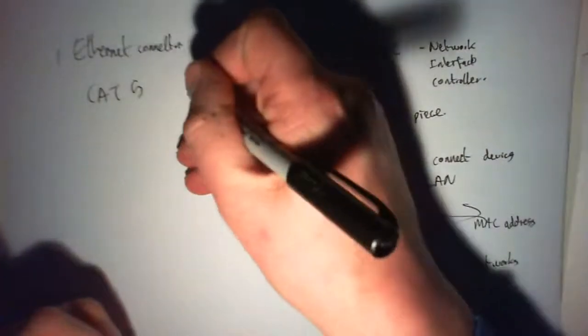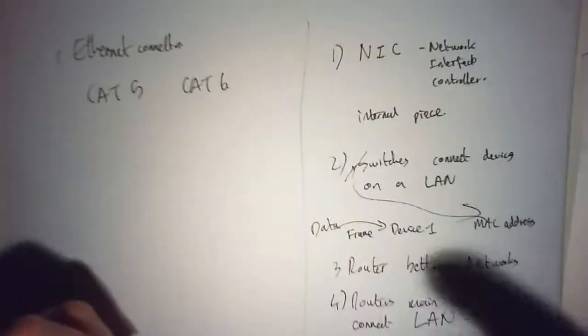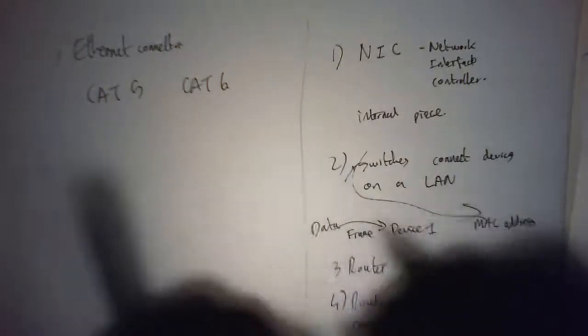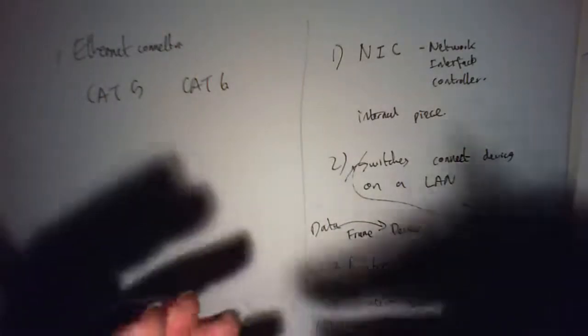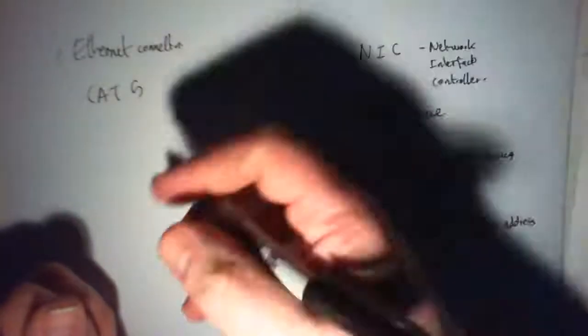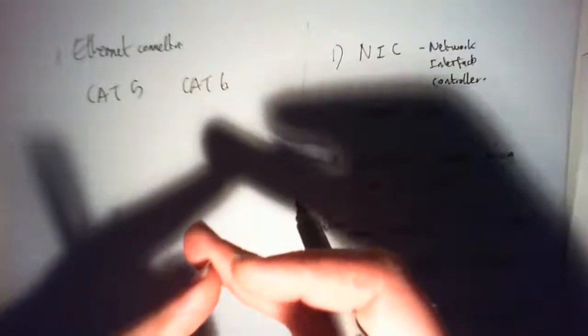The most common ethernet connections are what's called CAT5 and CAT6. They're twisted. So if you ever kind of have a look at it, they're copper wires, which they're twisted around each other in a certain way to reduce interference between the different copper wires.